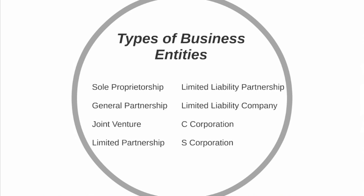We then look at the different types of business entities and apply these different elements to each of the most common forms. These include the sole proprietorship, the general partnership, joint venture, limited partnership, limited liability partnership, limited liability company, and the corporation — which includes a C election corporation and an S election corporation, because this tax election can affect some aspects of operations of the business entity.